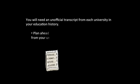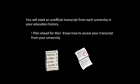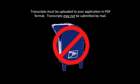In the Education History section of your application, you will need to upload an unofficial transcript from each college or university in your educational history. Plan ahead so you know how to access your university system for viewing and downloading unofficial transcripts. Please note you do not have the option to send in a transcript by mail — you will need to create a PDF version of an unofficial transcript to upload to SOLAR.